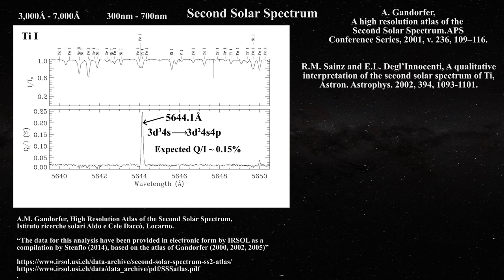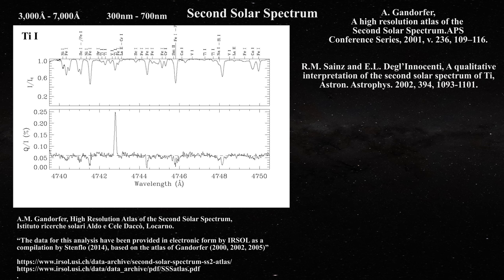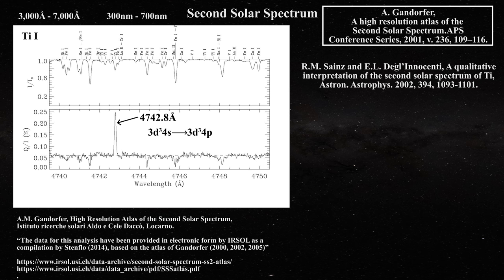Something important is happening here — why titanium and why so intense? This is pointing to the fact that something much more important than random polarization processes are taking place in the Sun. The polarization was much more powerful than predicted by theory. Let us examine another titanium line: the well-known transition at 4742.8 angstroms, where the transition goes from an s orbital to a p orbital. This line has been characterized as being one of the strongest in the second solar spectrum.